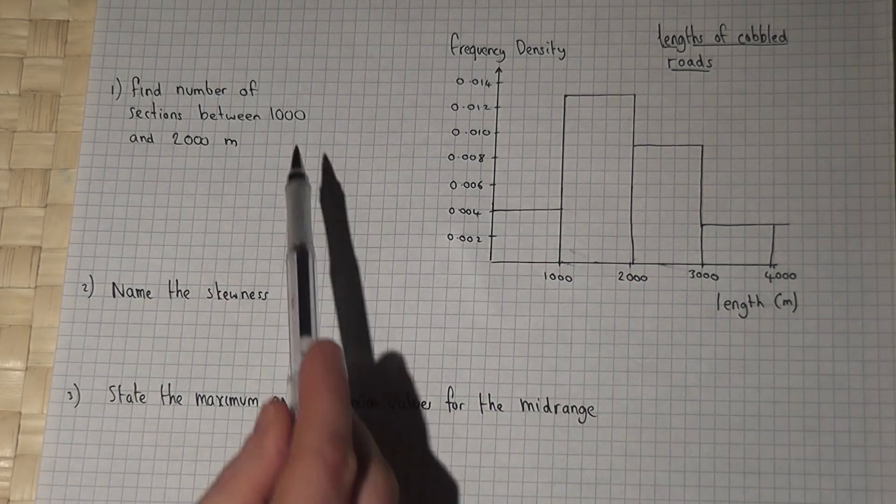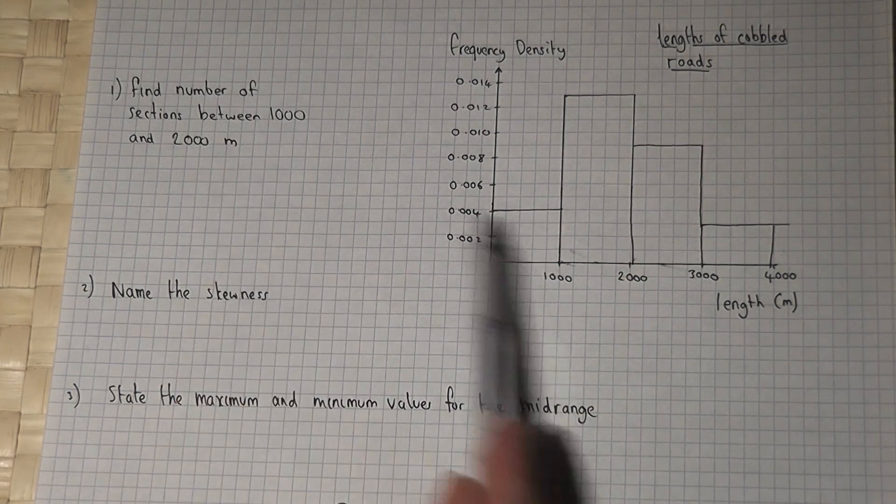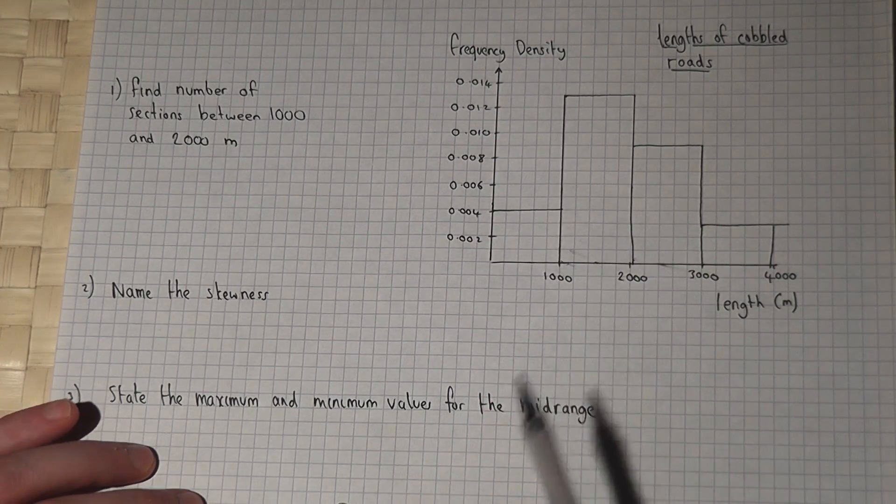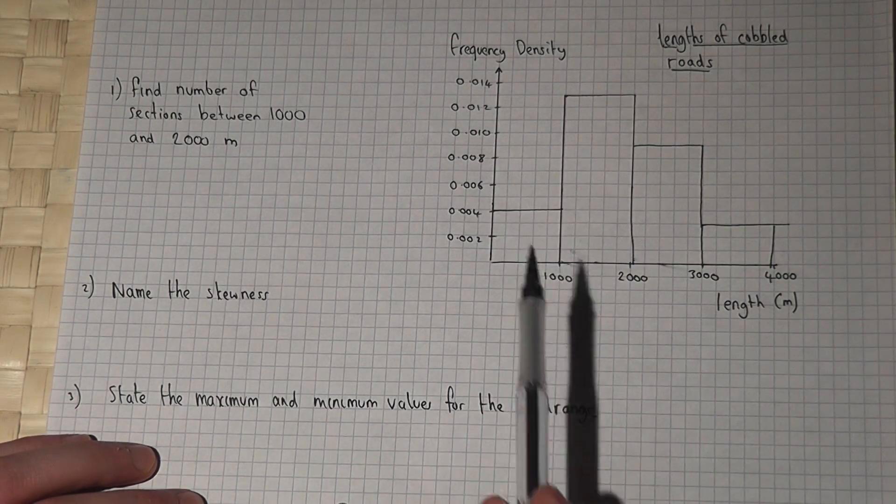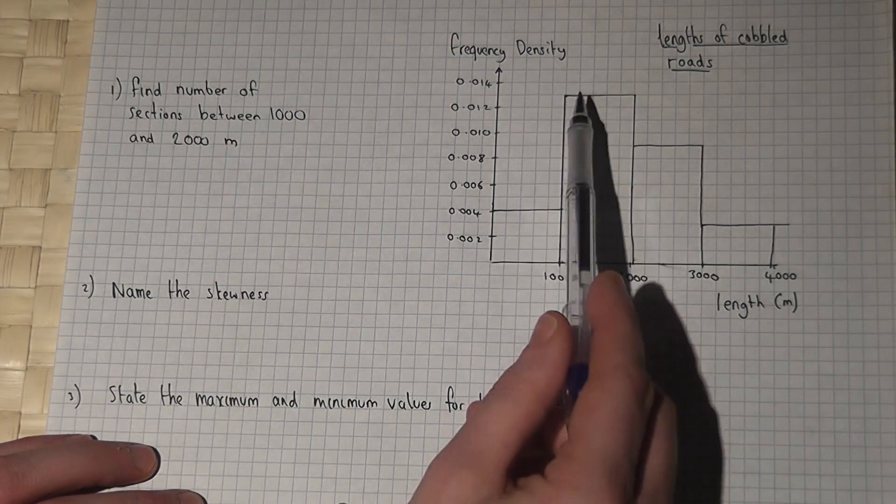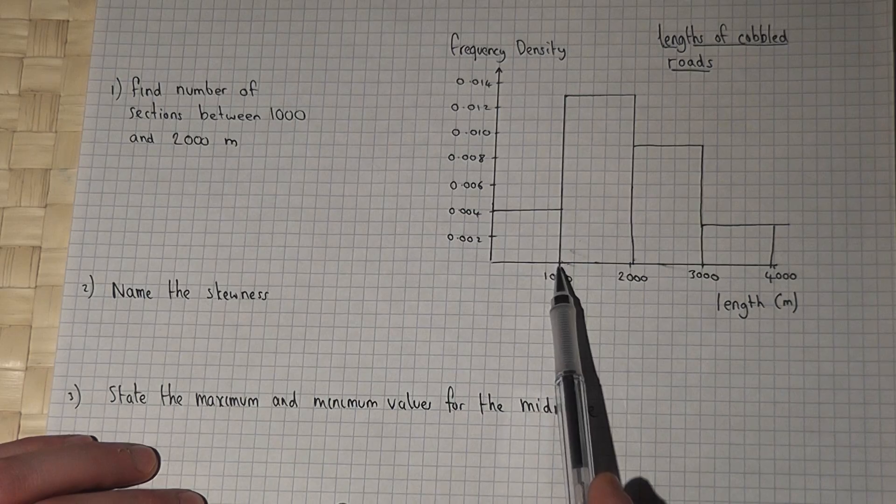Between 1000 and 2000 is this bar here. To find a frequency on a histogram, we have to work out the area of the bar between 1000 and 2000.